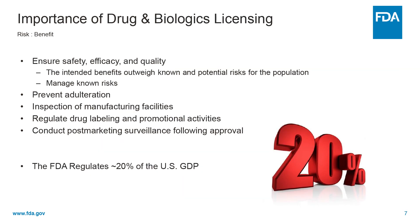The FDA regulates 20% of the U.S.'s gross domestic product, emphasizing the importance of the work we do. The risk-benefit evaluation is critical and continuous during a product's lifetime. The FDA continues to identify new risks and manage known risks, prevent adulteration of products through inspections of manufacturing facilities and monitoring of labeling and promotional advertising materials, and conducts post-marketing surveillance for product safety and clinical efficacy.